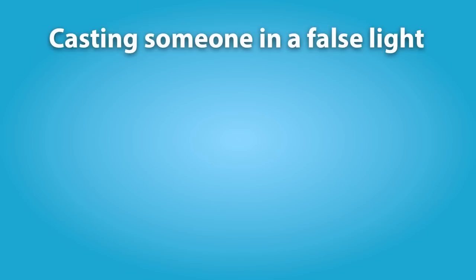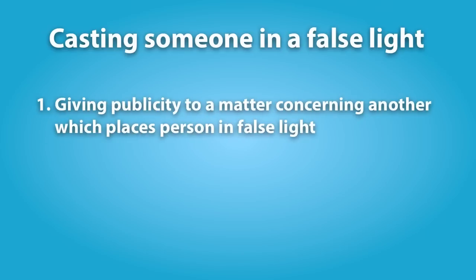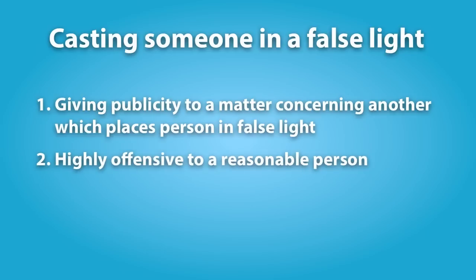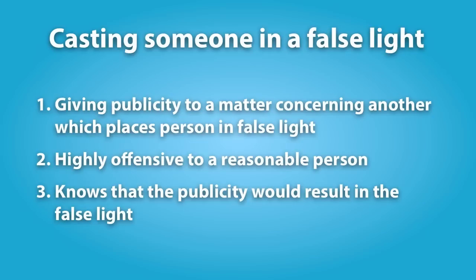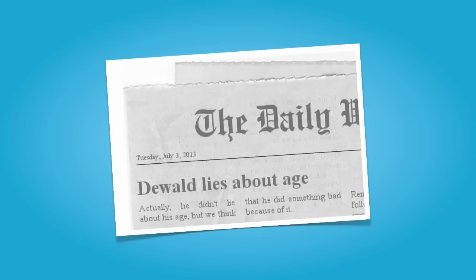The common law tort of false light is related to defamation, but can be based on truthful facts. The elements of this tort are: one, giving publicity to a matter concerning another which places that person in a false light; two, which is highly offensive to a reasonable person; and three, the person knows that the publicity would result in the false light. An example would be where a newspaper publishes a story casting an individual in a false light — the facts may be true, but the context or juxtaposition of facts creates a false impression, such as falsely portraying someone as a coward, a drunkard, or as responsible for someone's death.